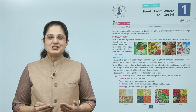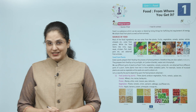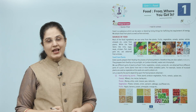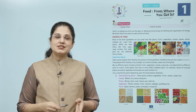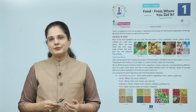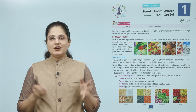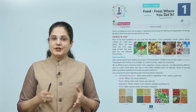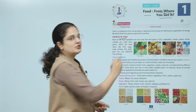Hello children, hope all of us are excited to begin this new session. The topic we will study today is food — where you get it. The things we will learn are: sources of food, and food for animals. Food is a substance which can be eaten or drunk by living things for fulfilling the requirement of energy. We obtain food from plants as well as from animals.